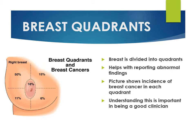The breast is divided into quadrants — four sections created by two lines crossing each other — to help report where any abnormality is found. These are the upper outer, upper inner, lower inner, and lower outer quadrants, plus the areola complex. The numbers on the slide represent how much breast cancer develops from each quadrant. The upper outer quadrant is known to have the most breast cancer — almost half of all breast cancers arise there — which is very important to understand as a clinician.